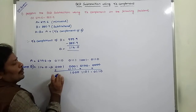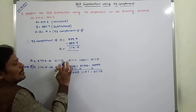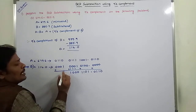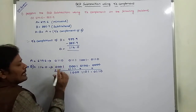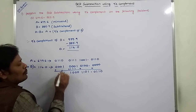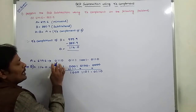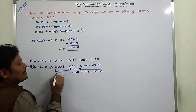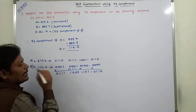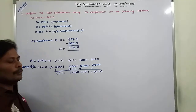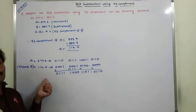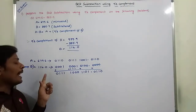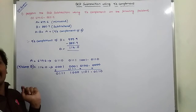For the fourth 4-bit binary group: 0 plus 1 is 1, 1 plus 0 is 1, 1 plus 0 is 1, 0 plus 0 is 0. Here, there is no carry generated — no end-around carry is generated.